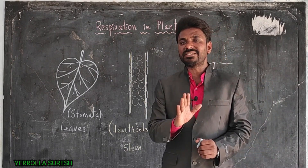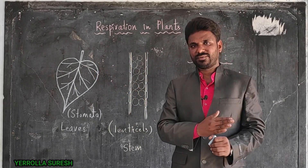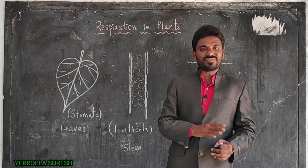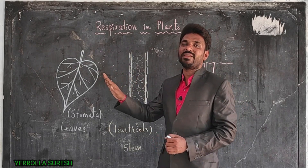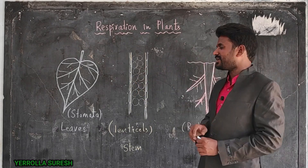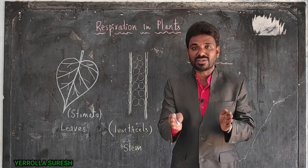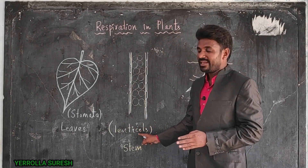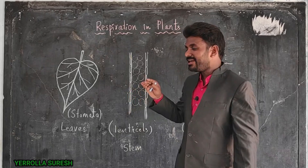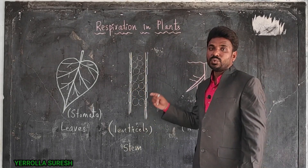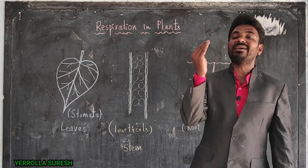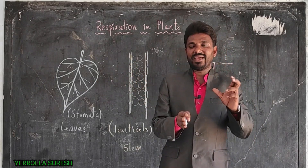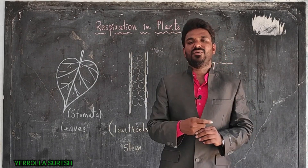Plants do not have any special system to send oxygen to all cells, so each part independently receives oxygen from the atmosphere. Similarly, stems also perform respiration. On the surface of the stem, many small holes are present called lenticels. Unlike the stomata on the lower side of leaves, lenticels are found on the surface of the stem. Through the lenticels, exchange of gases occurs by the process of diffusion in the same manner as in leaves.